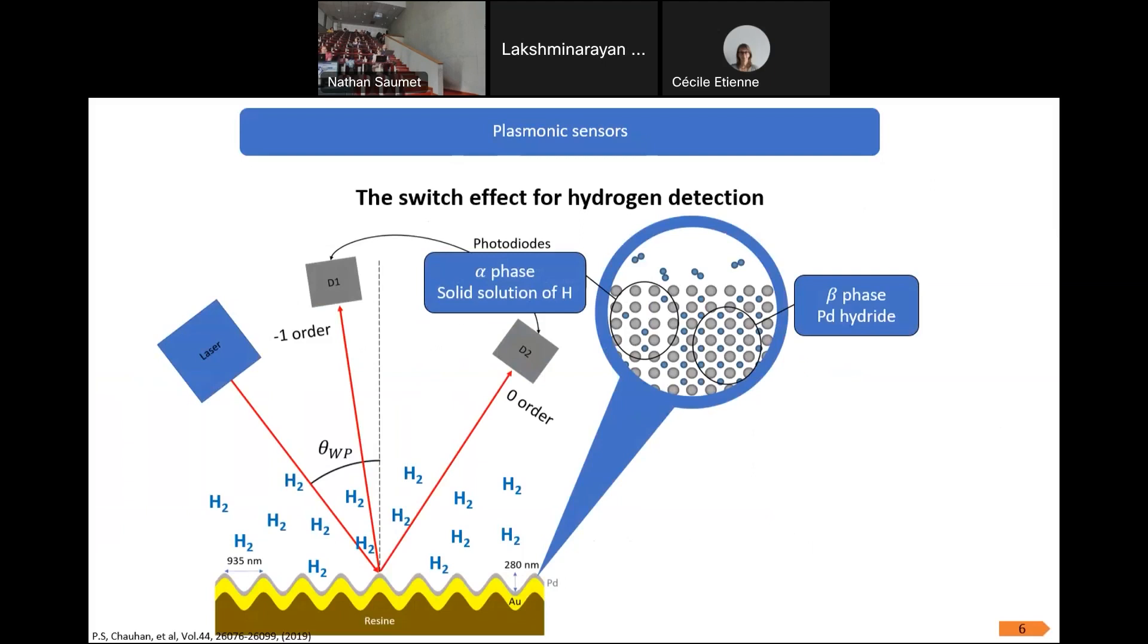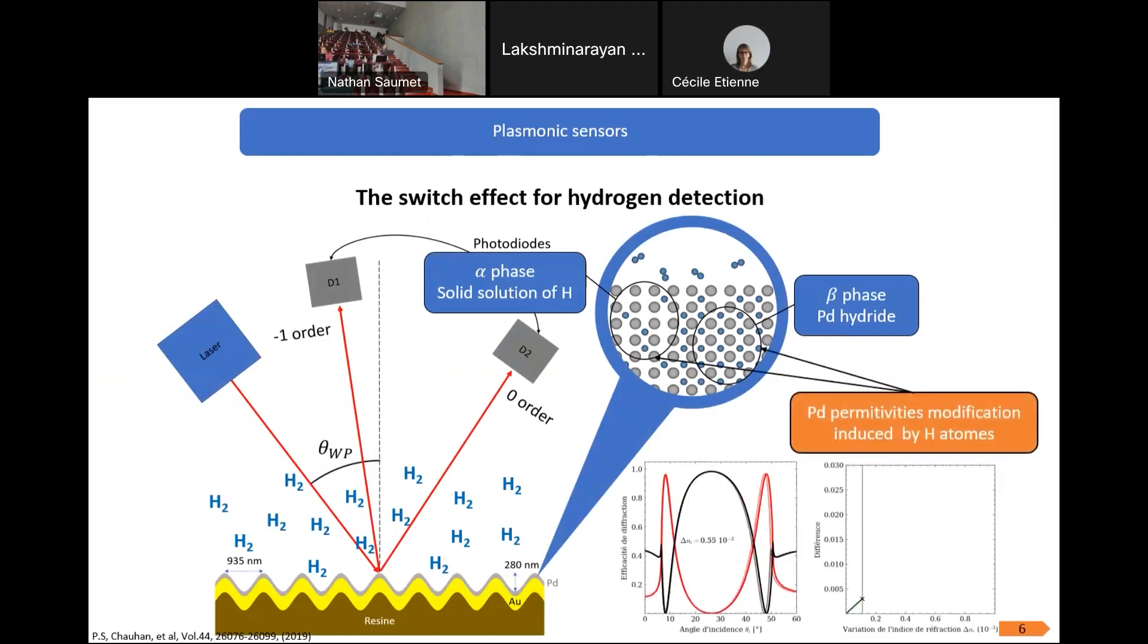In this configuration, we can observe three different phases. The first one is the alpha phase, which is a solid solution of hydrogen. The second one is the beta phase, which is palladium hydride. And the third phase is a combination of these two phases. The insertion of hydrogen into the palladium lattice will then modify the permittivity of the palladium. This modification of permittivity can be triggered by our system of measurement through our normalized difference.